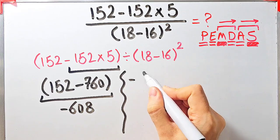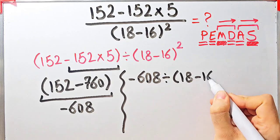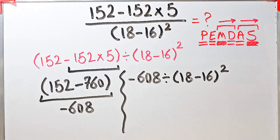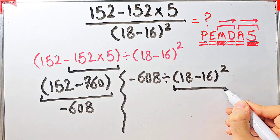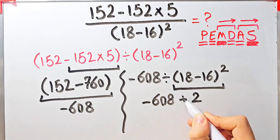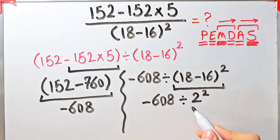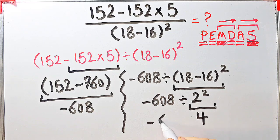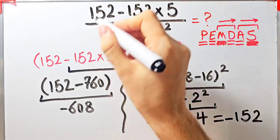Now the question is negative 608 divided by open parentheses 18 minus 16 close parentheses, all to the power of 2. We simplify the parentheses: 18 minus 16 equals 2. Now the question is negative 608 divided by 2 to the power of 2. We have division and exponent; first we simplify the exponent: 2 to the power of 2 equals 4. Now we have negative 608 divided by 4, which equals negative 152. The final answer of this question equals negative 152.